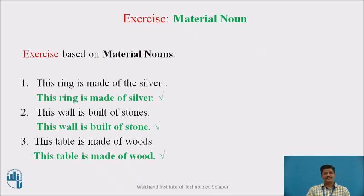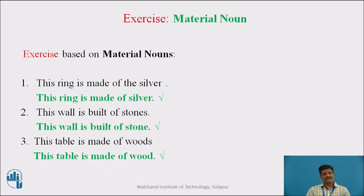Let us do an exercise based on Material Noun. Sentence No. 1: 'This ring is made of the silver.' There is an error — the use of the Definite Article 'The.' Generally, we do not use 'The' before Material Nouns like silver. We need to remove the Definite Article, so the right sentence is: this ring is made of Silver.